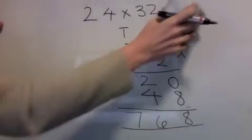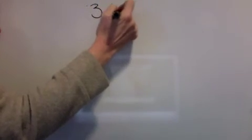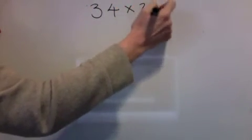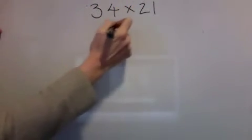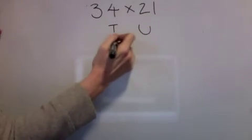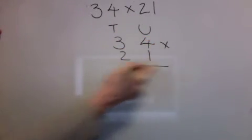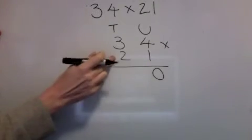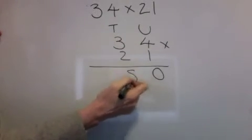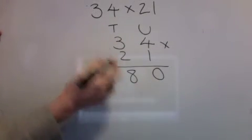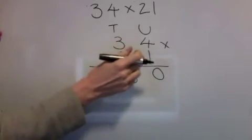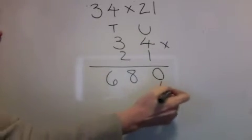Let's do that again. 34 times 21. Tens and units. 34 times 21. Nought down. 2 times 4 is 8. 2 times 3 is 6. 1 times 4 is 4.